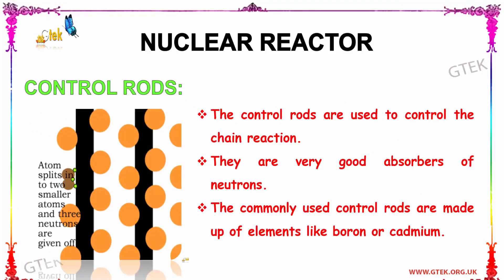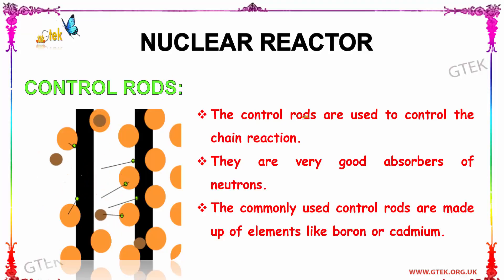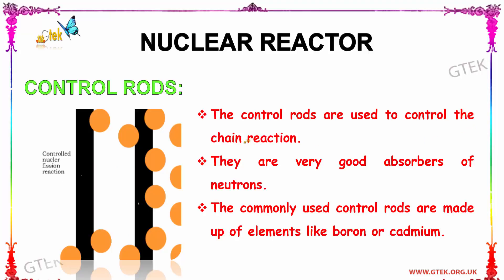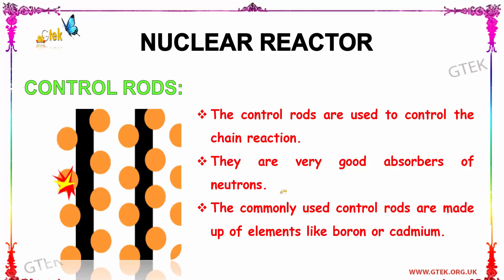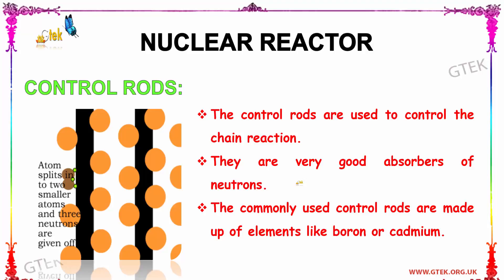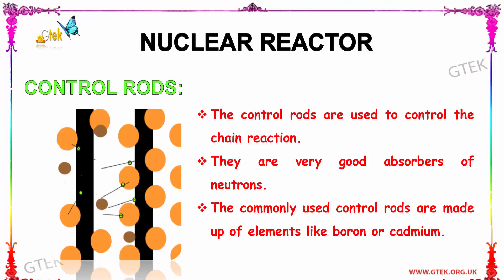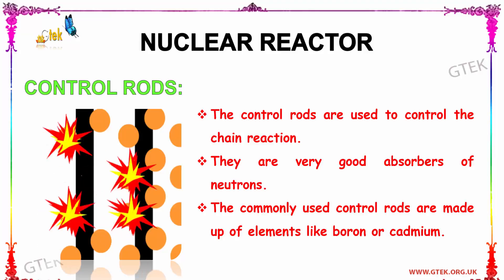Now let us see about the control rod, which is a part of the nuclear reactor. Control rods are used to control the chain reaction. They are very good absorbers of neutrons. The commonly used control rods are made of elements like boron or cadmium.